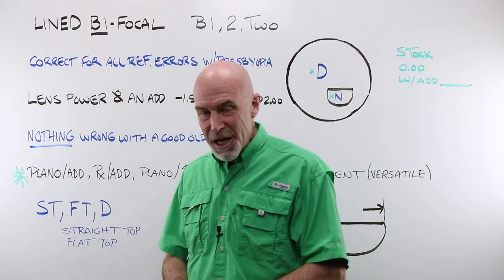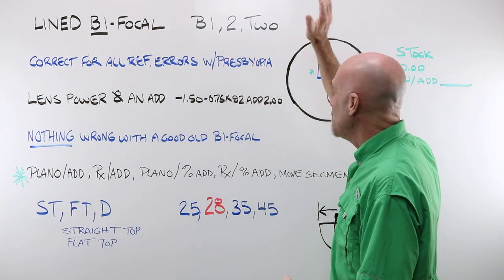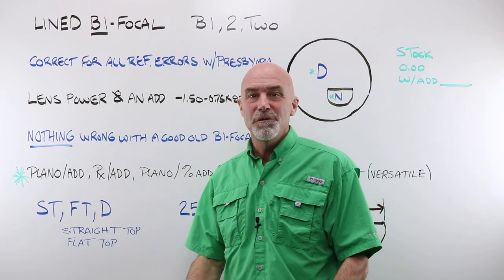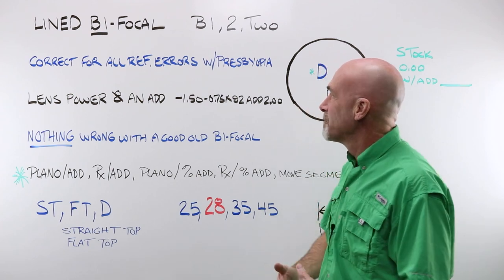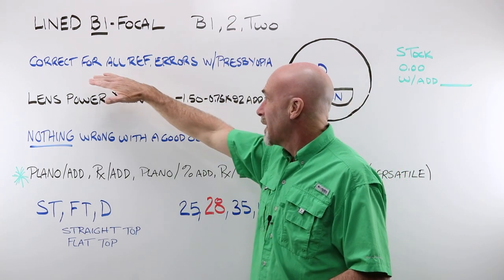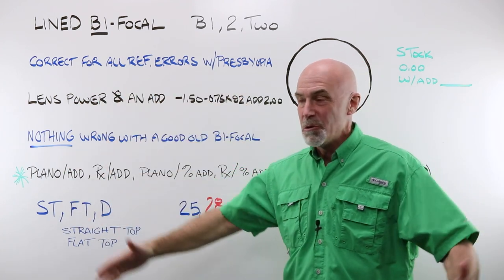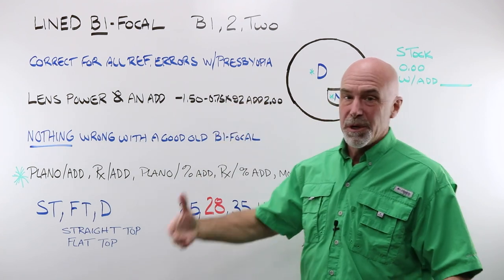Next up, we have lined bifocals. Bi, bi meaning two, two different distinct areas of good, crisp, clear vision through a lens. A lined bifocal can correct for all the refractive errors, including emetropia, if you will, with the added piece of presbyopia.